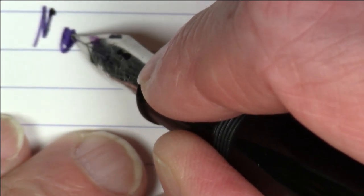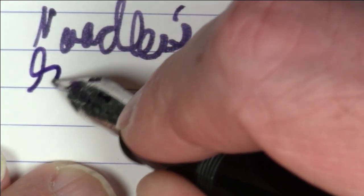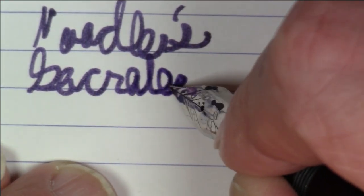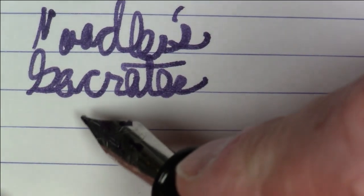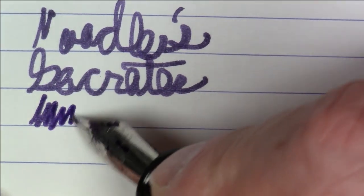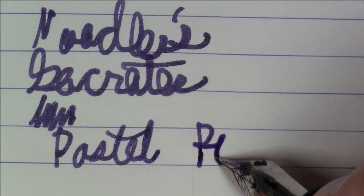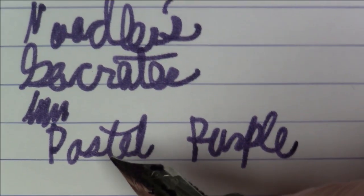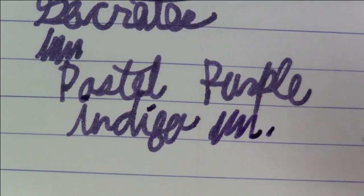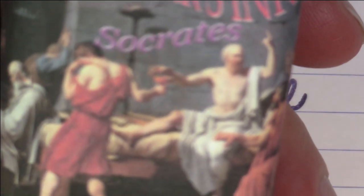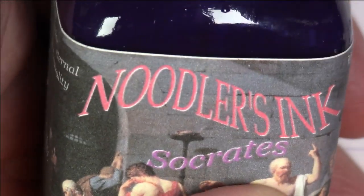Okay, so this ink here is Noodler's Socrates. Or if you're a Bill and Ted's Excellent Adventure fan, Socrates. So anyway, Noodler's Socrates. So this is basically a somewhat of a pastel purple. Or maybe an indigo. Again, nice ink from Noodler's. Writes really well. Has a really cool label.